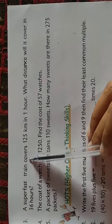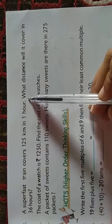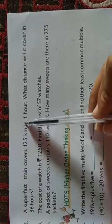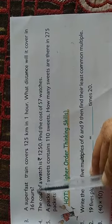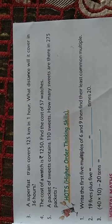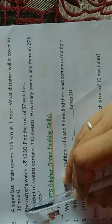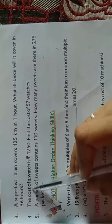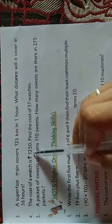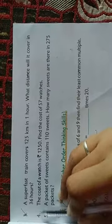Now see question number 3: A super fast train covers 125 km in 1 hour. What distance will it cover in 36 hours? In 1 hour it covers distance 125 km, so we will find in 36 hours how much distance it will cover, so we will do here multiply. After that, question number 4: The cost of a watch is rupees 1250. Find the cost of 57 watches. Cost of one watch is 1250, and cost of 57 watches, so we will do here multiply. Leave this one question, we will do only 4 parts.